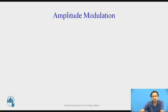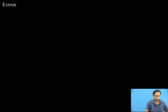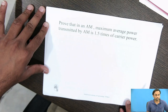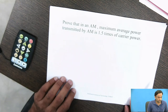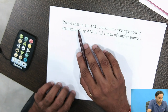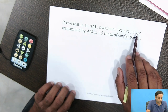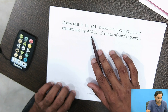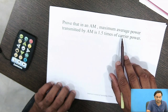Now we'll see some examples regarding amplitude modulation. The main AM equation has three components: the carrier signal, the LSB, and the USB. The first example is: prove that in AM, the maximum average power transmitted is 1.5 times the carrier power.